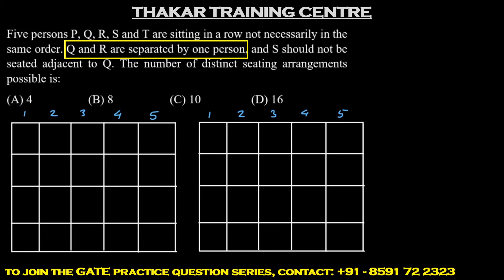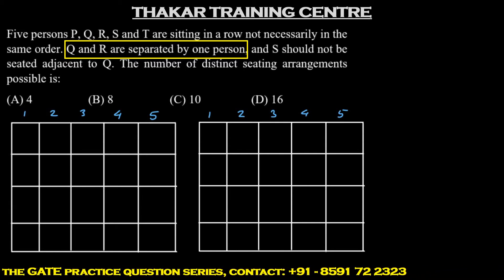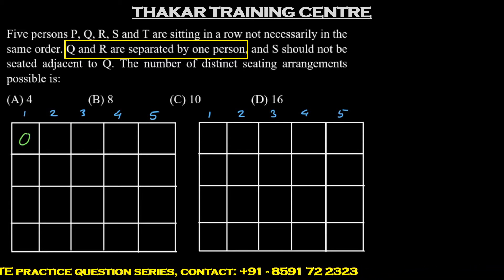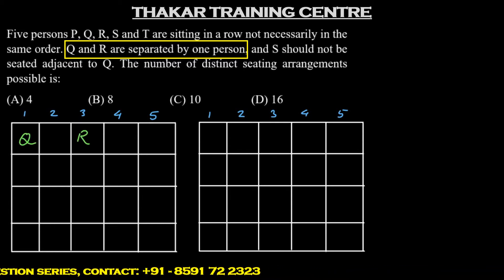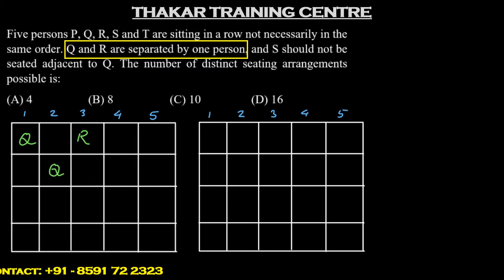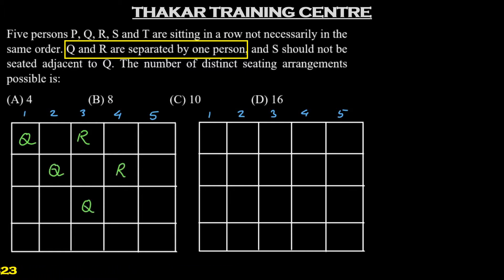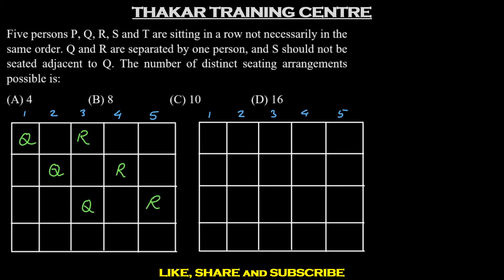So Q and R could be occupying positions 1 and 3, or they could occupy positions 2 and 4, or they could occupy positions 3 and 5. Let's look at these one by one.